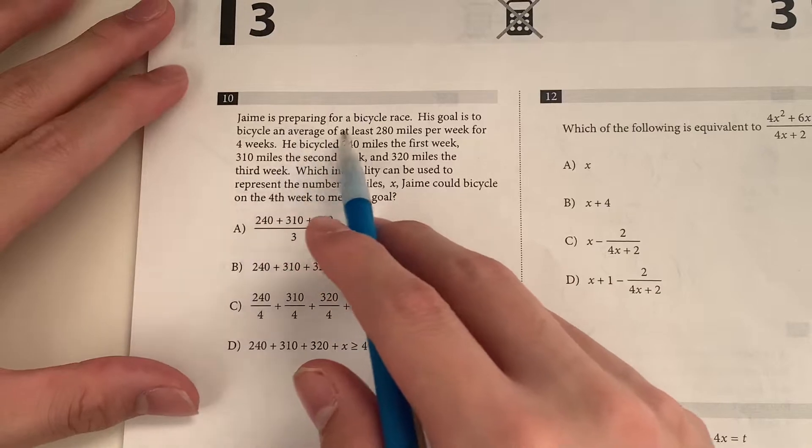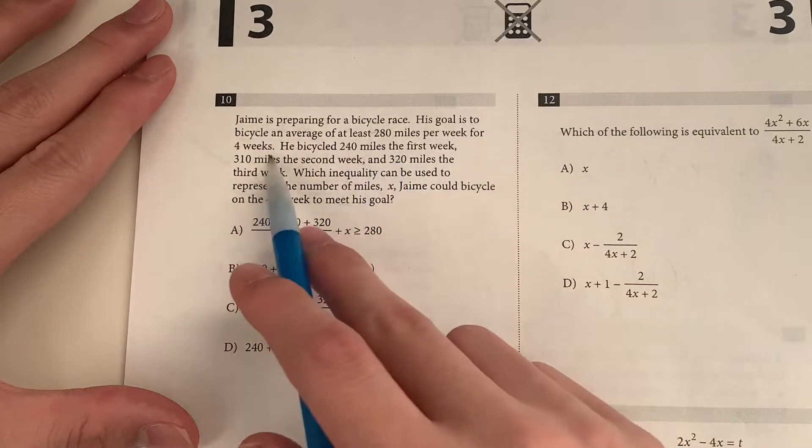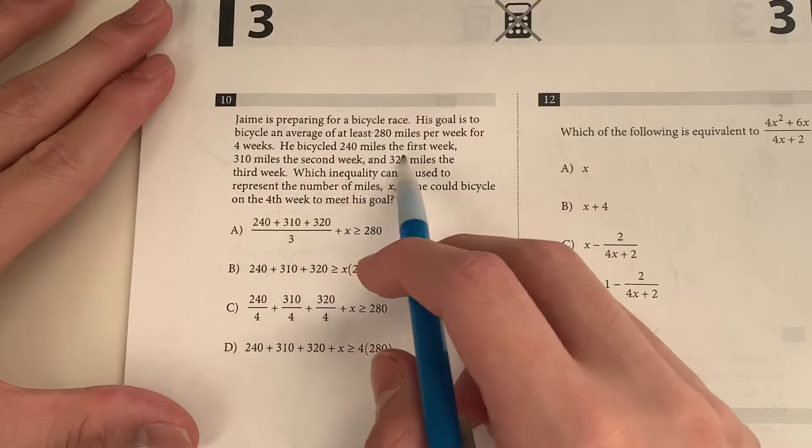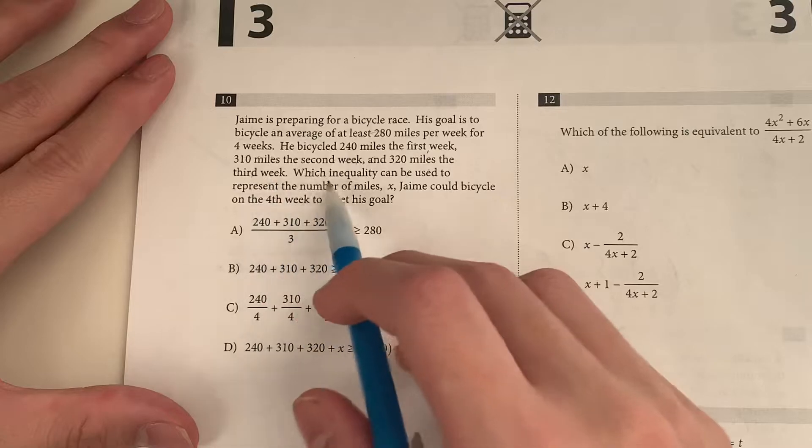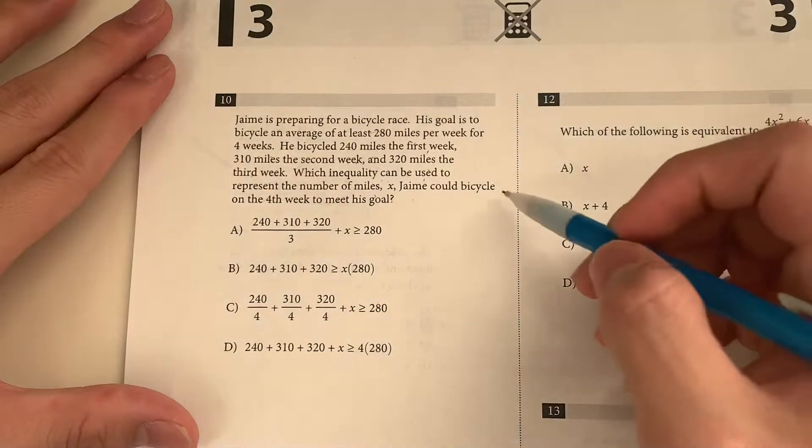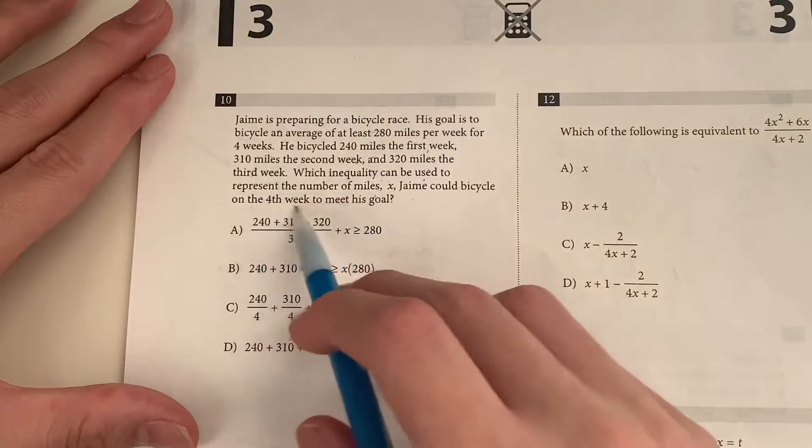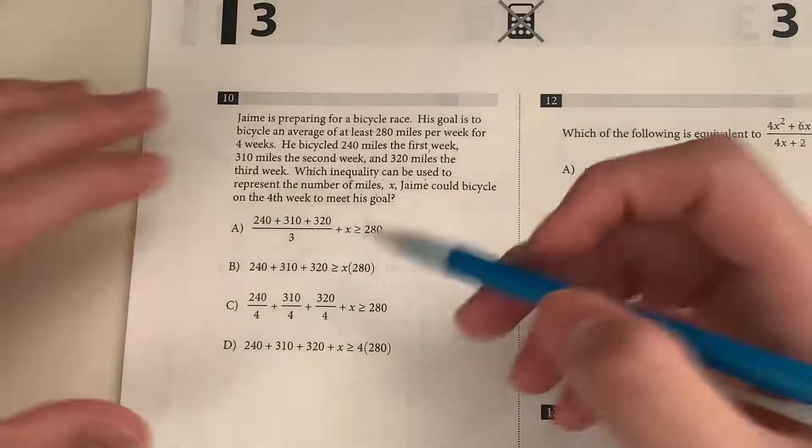Question 10. Jamie is preparing for a bicycle race. His goal is to bicycle an average of at least 280 miles per week for four weeks. He bicycled 240 miles the first week, 310 miles the second week, and 320 in the third week. Which inequality can be used to represent the number of miles X Jamie could bicycle on the fourth week to meet his goals? So basically, we have to set up an inequality, right?